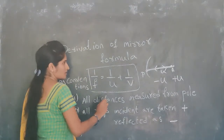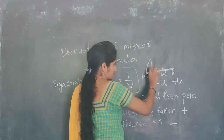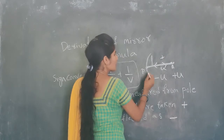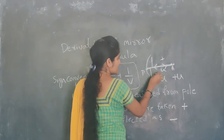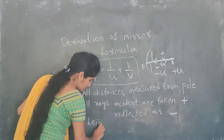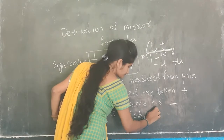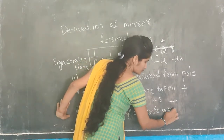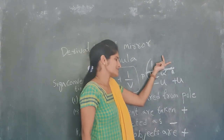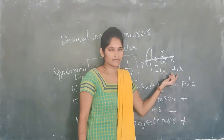The third rule concerns height. If the object height is above the principal axis, it is taken as positive. If it is below the principal axis, it is taken as negative — heights of objects above the principal axis are positive and those below are negative.